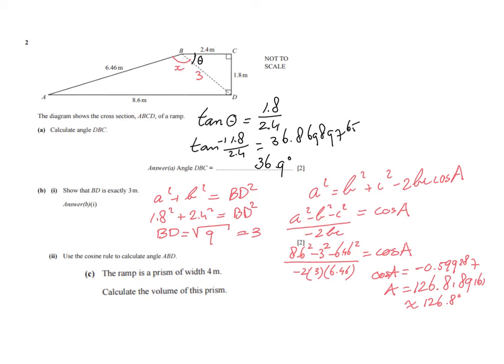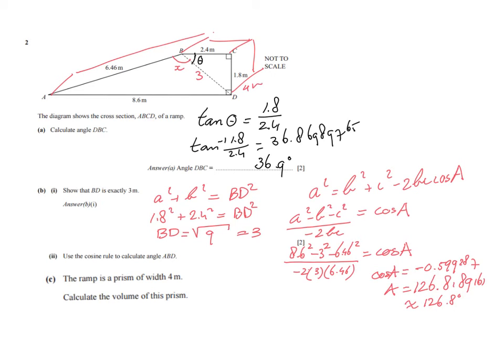It says the ramp is a prism of width 4 meters. So it is 4 meters deep, if you like. You see that? So that would be 4 meters then, 4 meters into that direction. Calculate the volume of the prism. And how do you calculate volumes of prism? That is always the cross-sectional area times the width or times the depth or the height, whatever you want to call it. I need to find the area of the cross-section. So that's the front part. And then I want times that by 4 to get the volume.